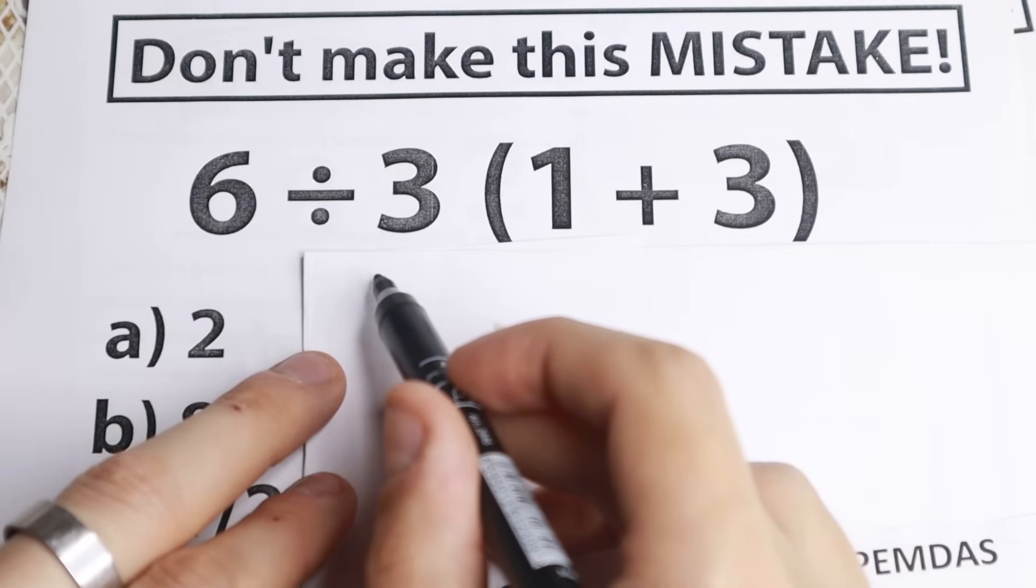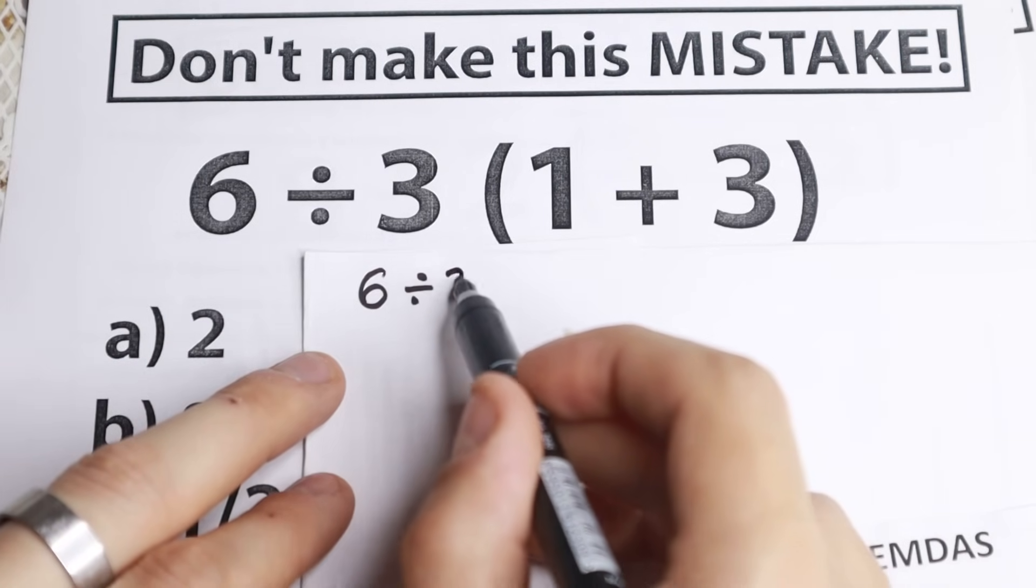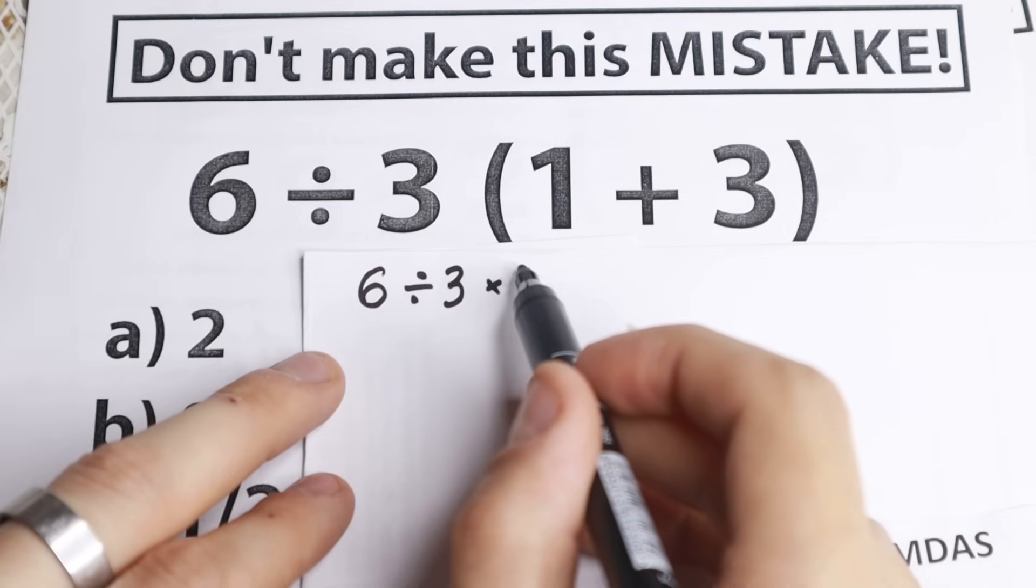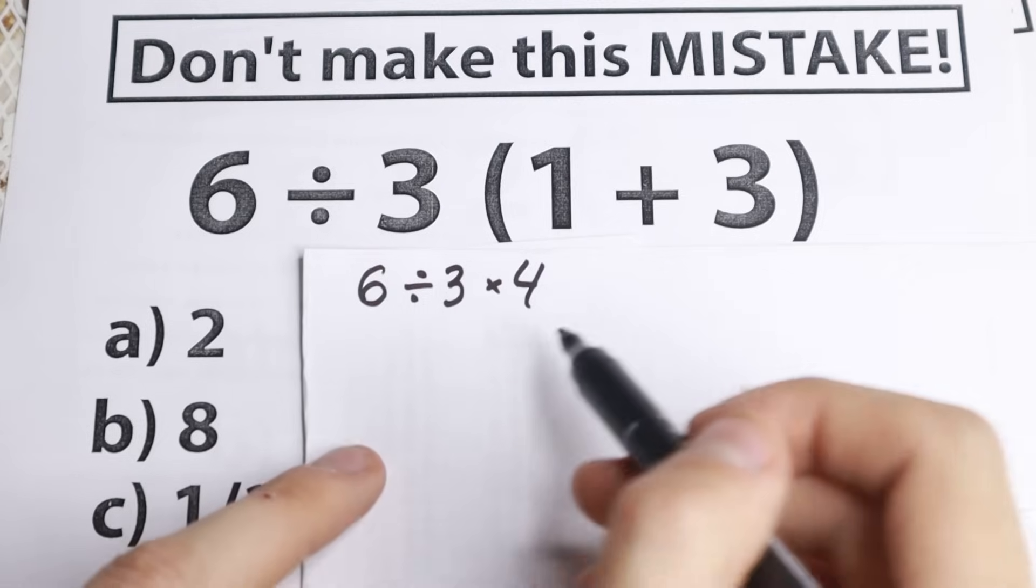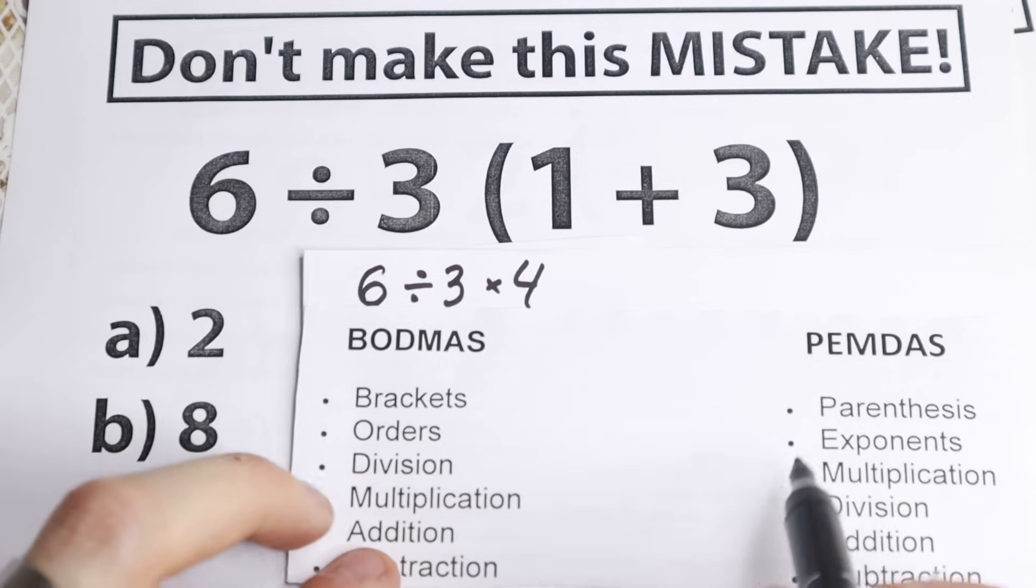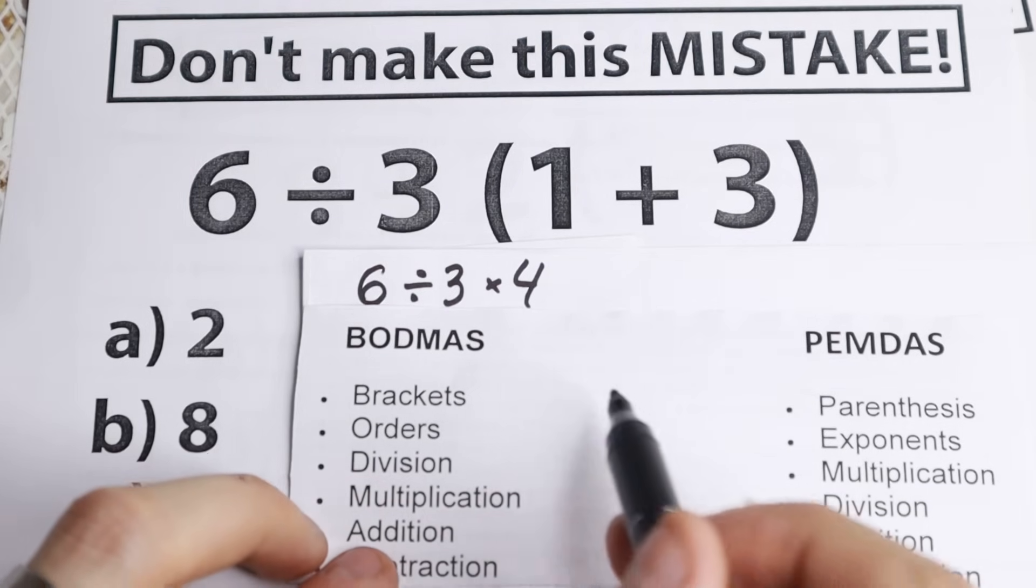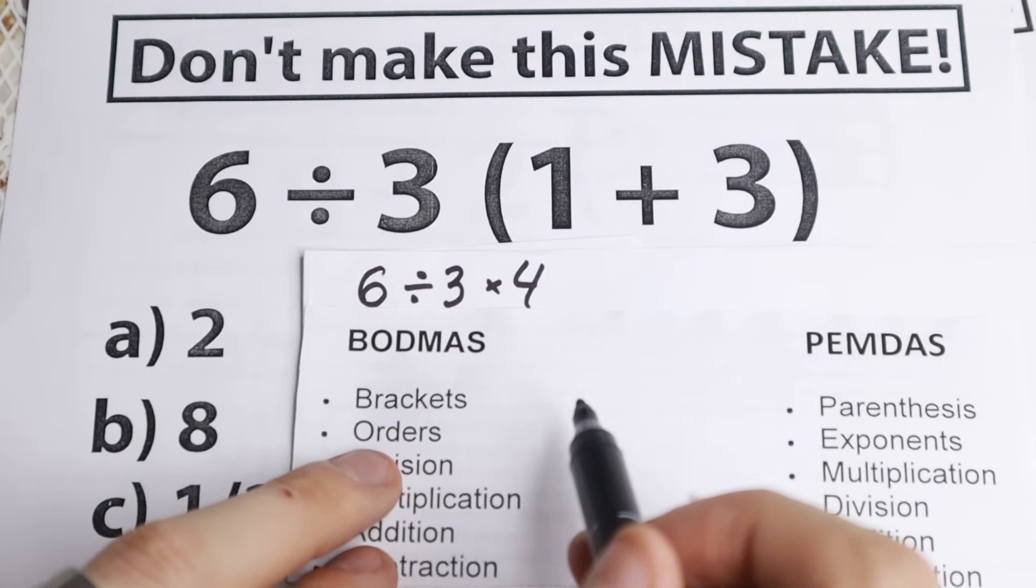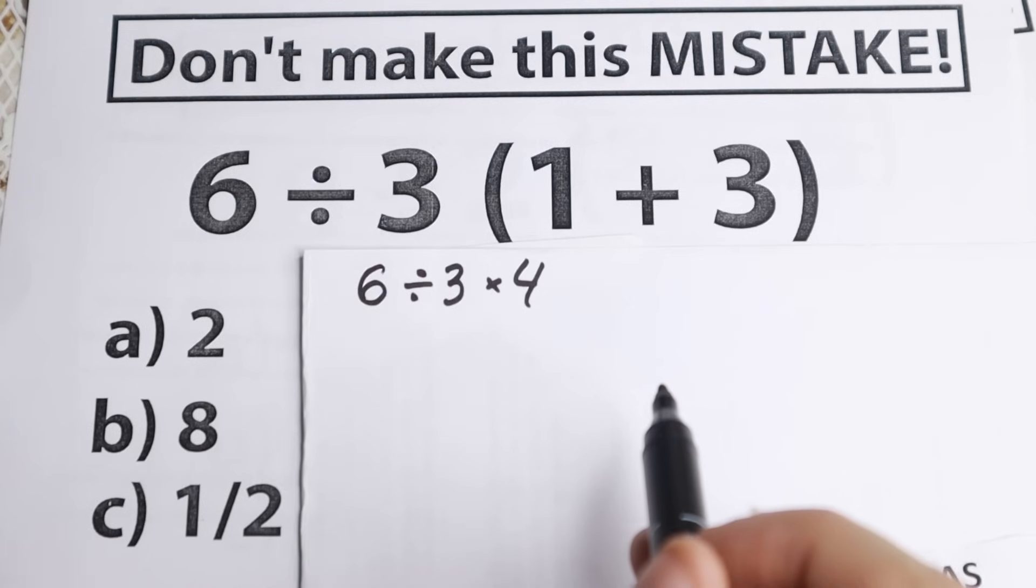We will have 6 divided by 3 times (1 plus 3 equals 4). This is absolutely the correct first step. As I said before, brackets and parentheses are the start for both of the most popular methods of order of operations.